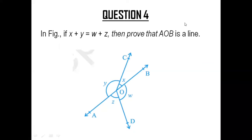Let us quickly get into question number 4, which says that in the figure x plus y is equal to w plus z, then prove that AOB is a line. Kindly observe the figure given over here and then let us quickly get to the solution.